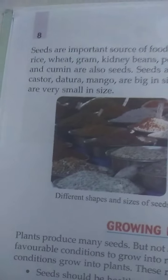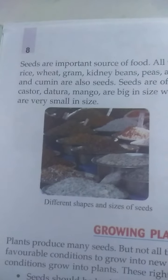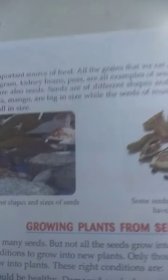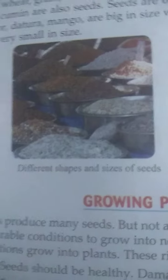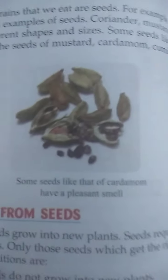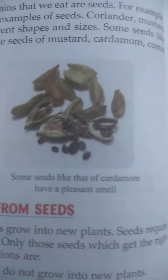Some seeds like castor, mango are big. Now let's look at mangoes — they have big seeds. Mustard, cardamom, and cumin are all very small in size. Here you can see small seeds and different seeds. Some seeds have a pleasant smell.